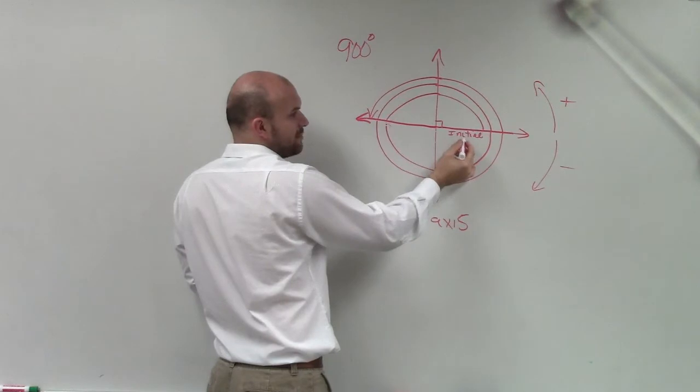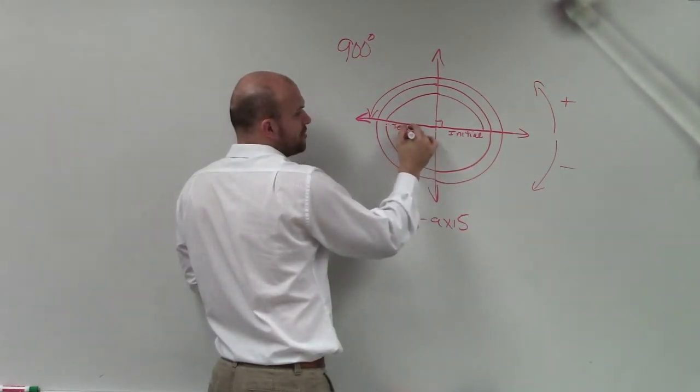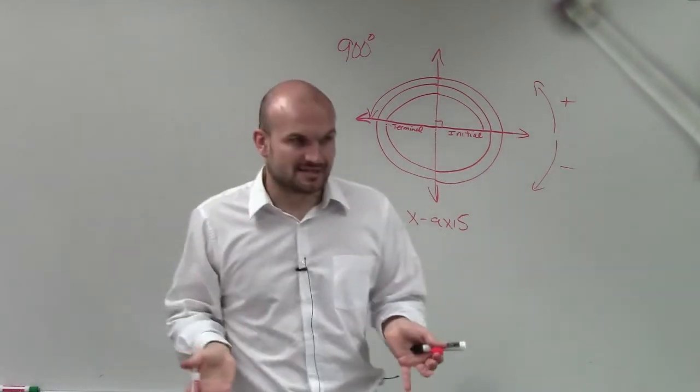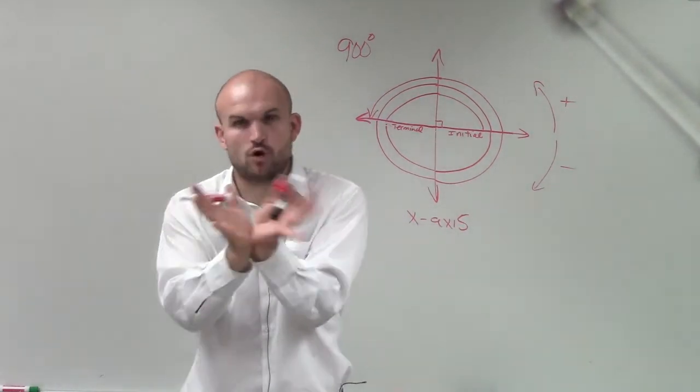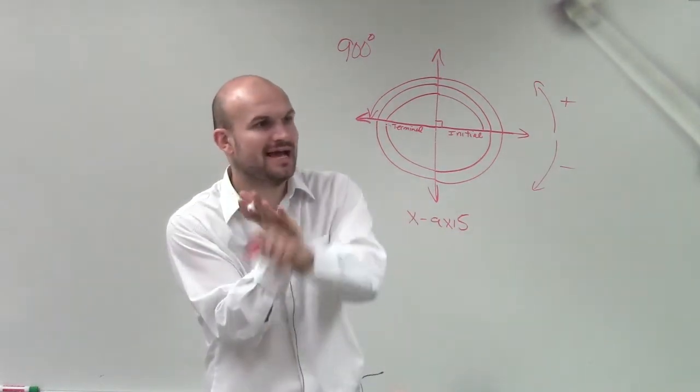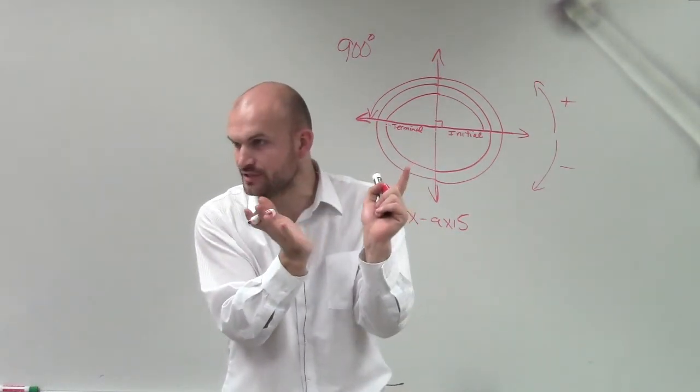So that's what we call our initial side, and this is what we call our terminal. It's where the graph ends, right? Because an angle is a rotation of rays. So you have a starting point, and then you have your ending ray where the end of the rotation ends.